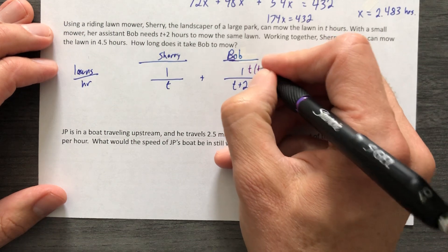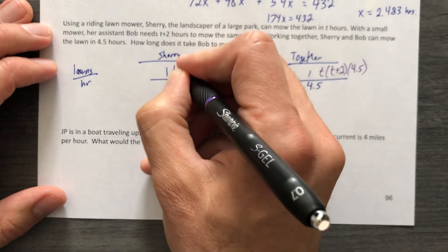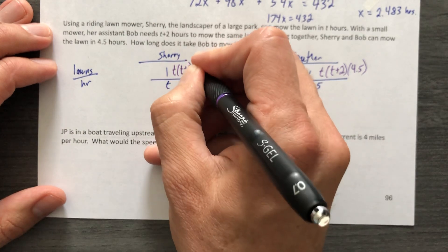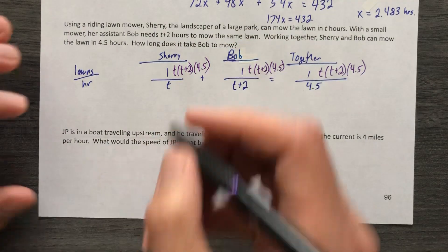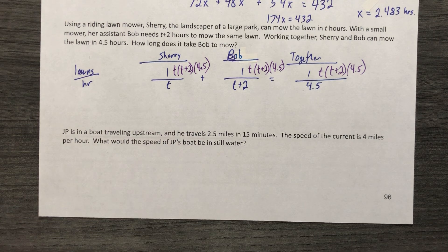T, T plus two, and 4.5 for each term. Okay, fantastic. Here we go.